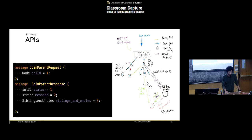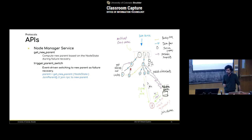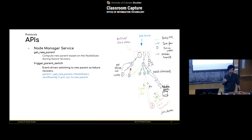Some things I haven't implemented yet but are clear how to implement given what's been done so far. The first is get new parent in case of failure — there's no RPC call here, it's a local computation. Given the node state, the node knows its siblings and uncles. One naive approach: randomly pick one of the available uncles and try it. If the node is full or at full capacity it sends a reject, and then the node tries another until it finds an available parent.